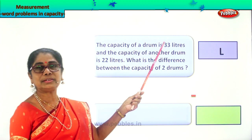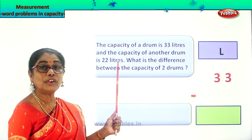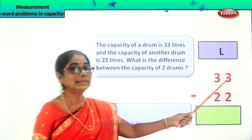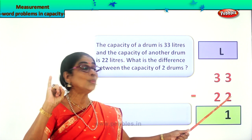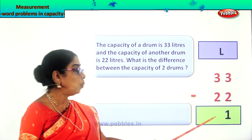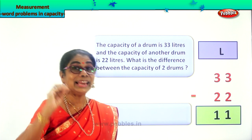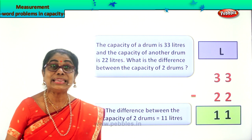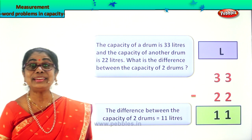The capacity of the first drum equals 33 liters, minus the capacity of the other drum, which is 22 liters. Now we find the difference: 3 minus 2 gives you 1, and again 3 take away 2 gives you 1. So the answer is: the difference in capacity between the two drums equals 11 liters. One drum can hold 33, the other can hold 22, and the difference is 11 liters. Did you enjoy? Good — thank you!